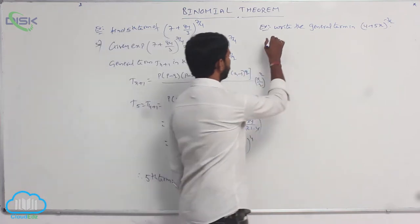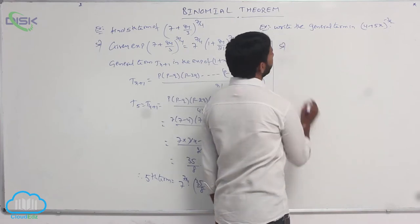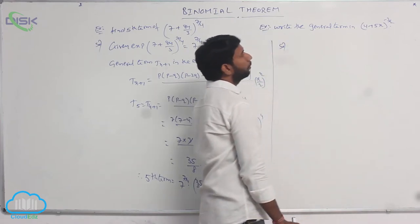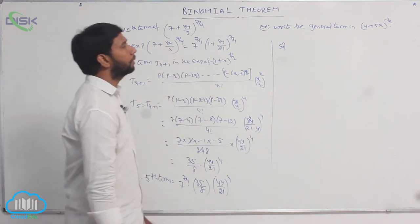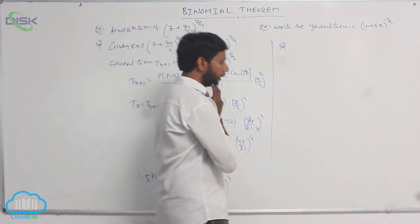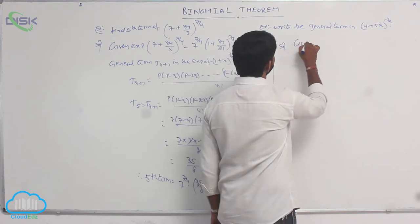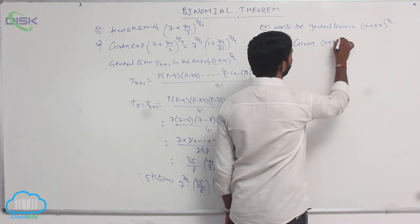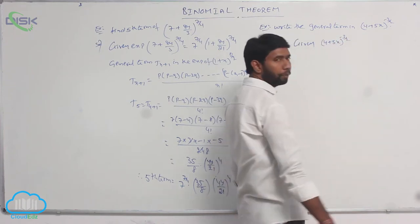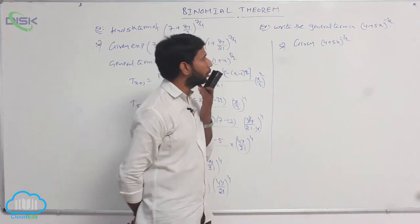Next example: write the general term of (4 + 5x) whole power −3/2. The given series is (4 + 5x) whole power −3/2. Any expansion is of the form (1 + x) whole power n or (1 − x) whole power n.